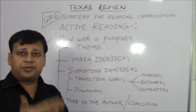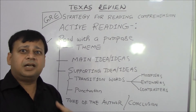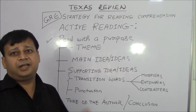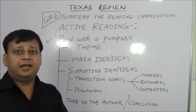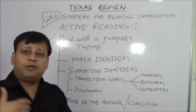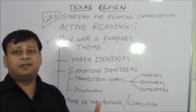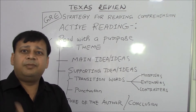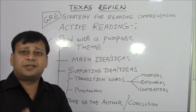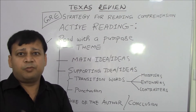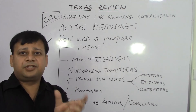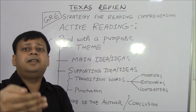As you proceed, you will see that the other ideas will be the supporting ideas. These supporting ideas can be identified by using your knowledge of transition words. They will either be in the form of modifiers that modify the given piece of information, or they will be extending a given piece of information, or they will work as a contrast to the given piece of information. Make sure that while you read, you are able to identify transition words and see when and how the idea is changing.